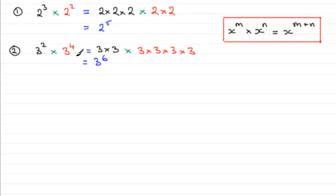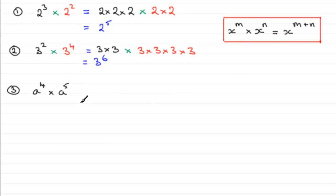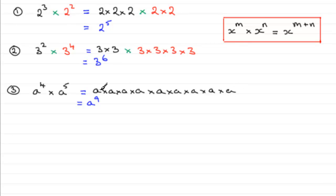Now, what happens if we use algebraic values? It doesn't have to be x — it could be any letter. Let's say a to the power 4 multiplied by a to the power 5. The result is a to the power 9. We can verify: a to the power 4 is a times a times a times a, and multiplying by a five times over gives us a repeatedly multiplied by itself nine times — so a to the power 9.